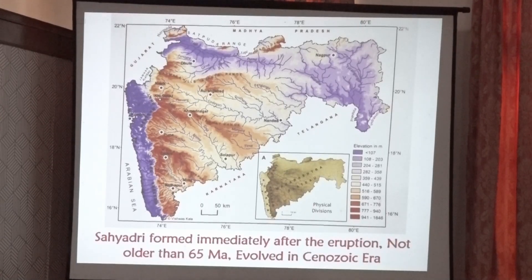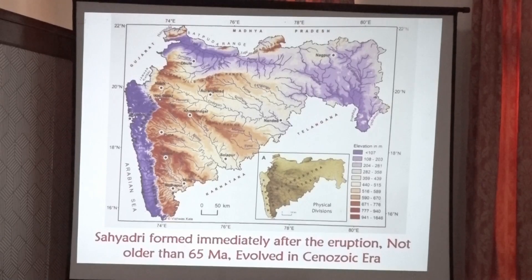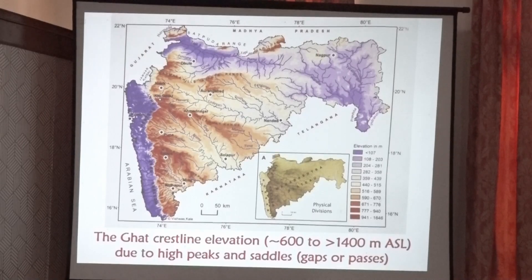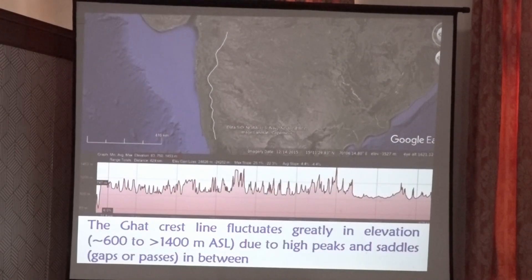The Sayadri was certainly formed after the eruption of the Deccan Volcanic Province. Therefore, the Western Ghats is not more than 65 million years old and has evolved only in the Cenozoic era. If we look at the crest line of the Ghats, it ranges between 600 to more than 1400 meters, with very high peaks and some saddle passes or gaps.